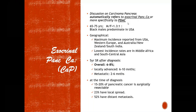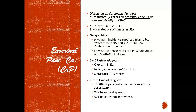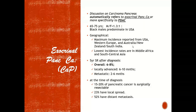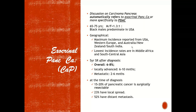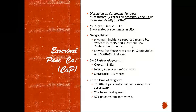Looking at PDAC demographics, the usual age group is 55-65 years. It is slightly more common in males, with a ratio of 1.3 to 1, and in the USA, black males predominate. Geographically, maximum incidence is in the western world — the US and western Europe — and also in Australia, New Zealand, and notably the southern part of India, especially Kerala. The lowest incidence is found in African countries.